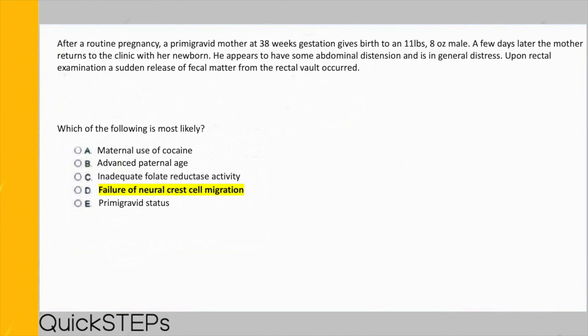If we read the rest of the question: after a routine pregnancy, a primigravid mother at 38 weeks gives birth to an 11-pound 8-ounce male, and a few days later the mother returns to the clinic with her newborn. This is consistent with Hirschsprung's, which typically presents with failure to pass first meconium after birth. There is an adolescent variant as well, but that is not high yield for Step 1 or Level 1 exams.